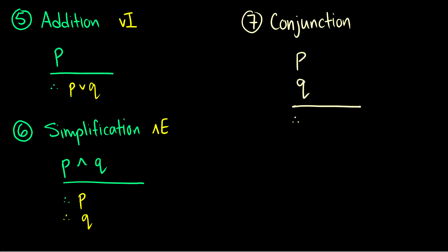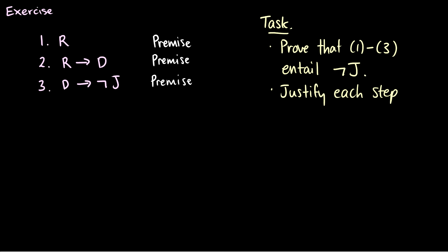The opposite of simplification is conjunction. Also known sometimes as and introduction. So if we have P and we have Q and those are both true, then of course, P and Q is going to be true. So simplification is removing the and. Conjunction is adding the and in between two true statements. Okay, those are all the rules of inference that we need to do some proofs.